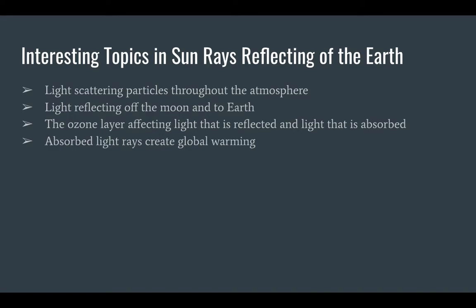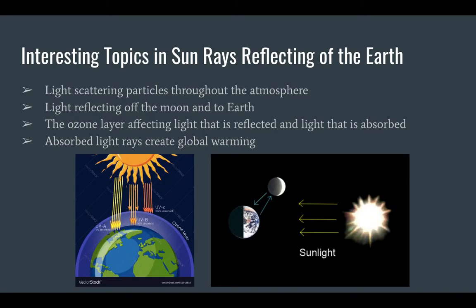One of the biggest problems, if not the biggest, this world faces right now is global warming. This is caused by rays of light from the sun warming the earth continuously after being trapped in the atmosphere. Another big factor are greenhouse gases, which are released by humans and human activity, which have been rising, raising the average temperature of the earth. Many people are trying to fix this problem with many solutions, and if people participate, it will eventually help save our planet.